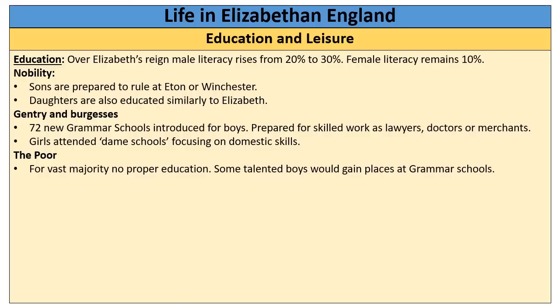Different classes get different education. For the nobility, sons are taught how to rule — sent to public schools like Eton or Winchester, taught Latin, history, theology and philosophy. Daughters of the nobility are also very highly educated, as Elizabeth herself was and they wanted to emulate her. The big new change in this period is for the middle classes — the gentry and burgesses. 72 new grammar schools were introduced for the sons of the more middle classes, opening new education opportunities. This is really why we see that 10% rise in literacy rates.